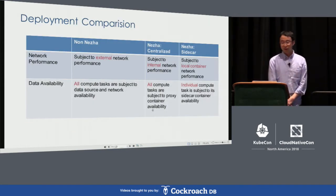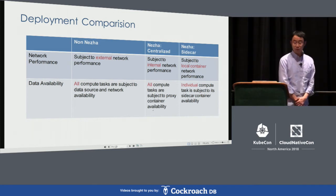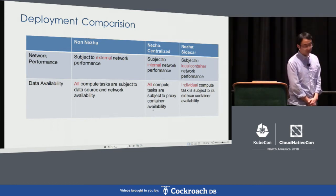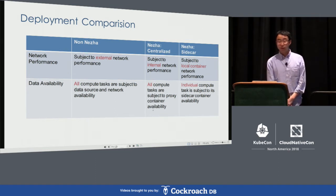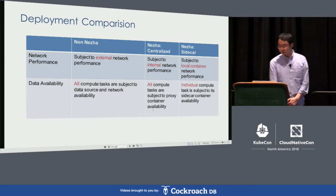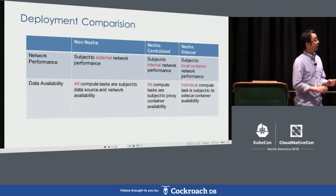Comparing deployments: with no caching, performance is limited to external network performance and availability is limited by network availability. With a centralized deployment, performance is limited by your internal network — usually maybe 10 gigabit. But with a sidecar model, data is fetched from the local container network, usually a loopback device, which is faster.